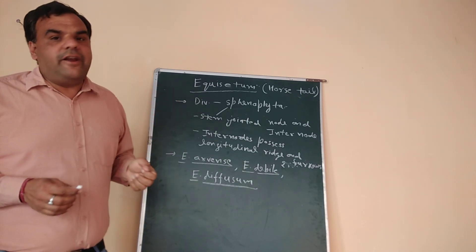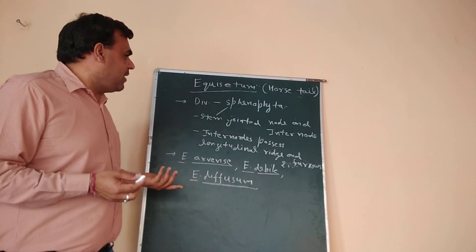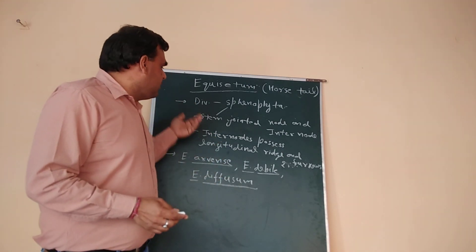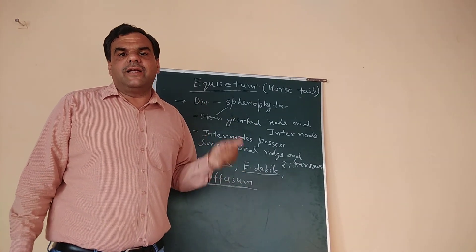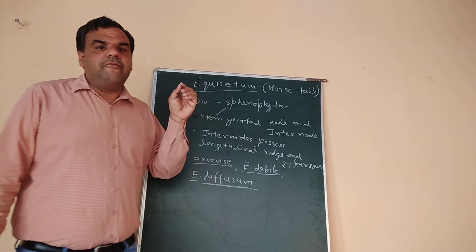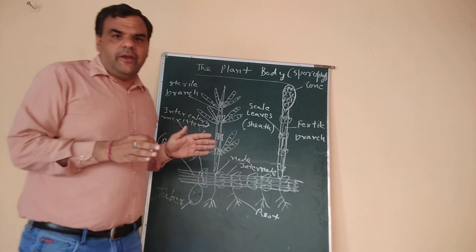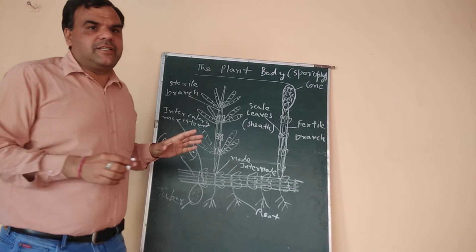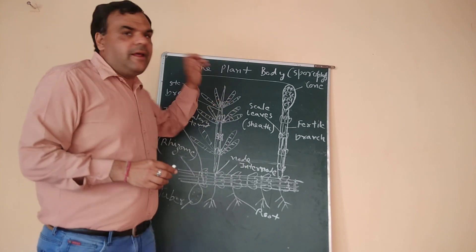Because Equisetum is a pteridophyte, the main plant body is the sporophyte — the sporophytic plant that produces spores. As pteridophytes, they have vascular bundles. Pteridophyte means first vascular bundle plants. The main plant body of Equisetum is sporophytic and is divided into root, stem, and leaves.